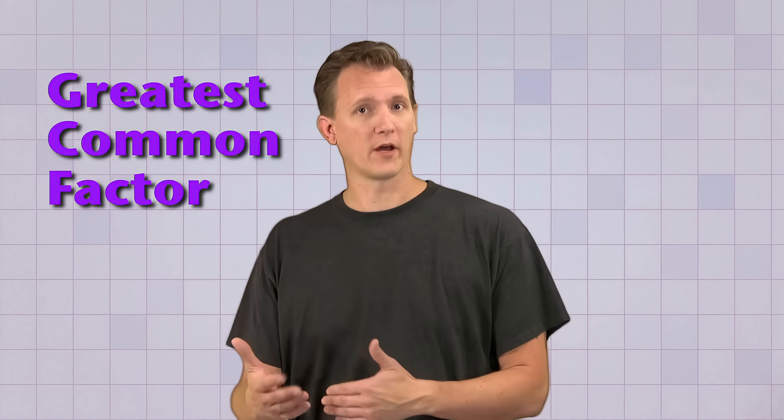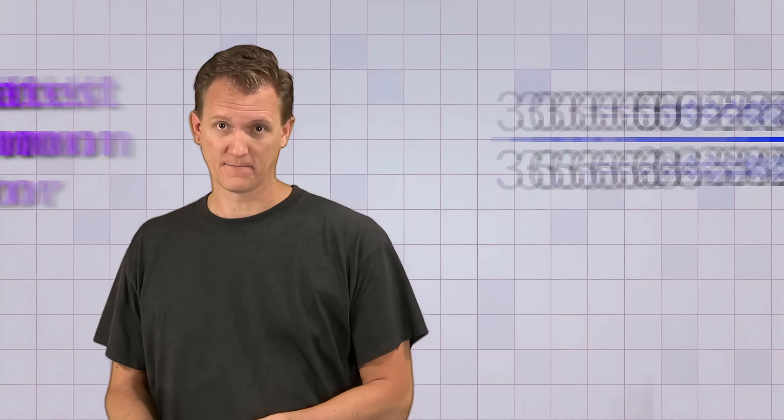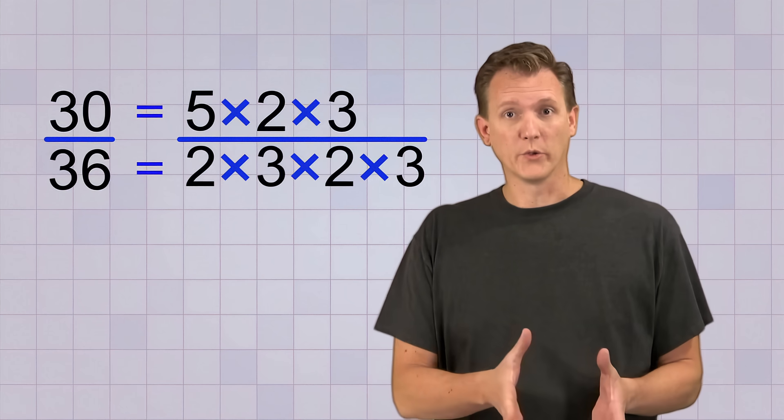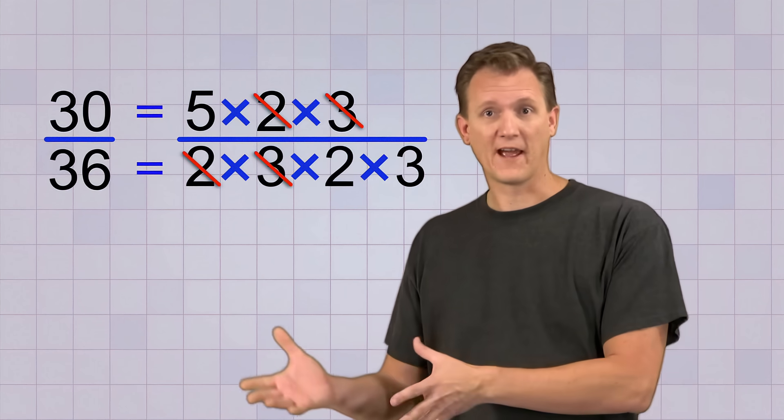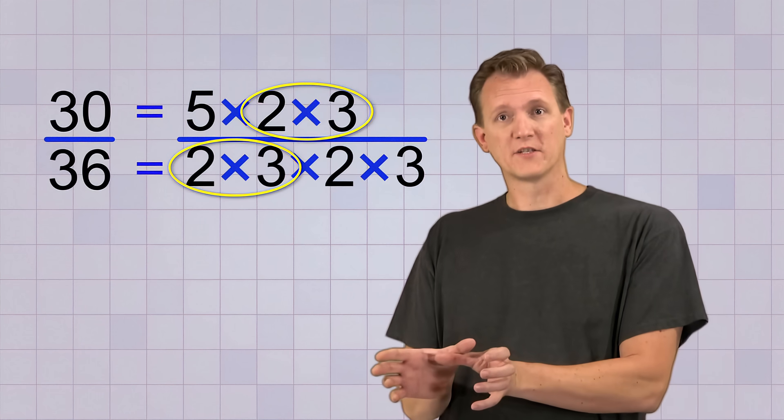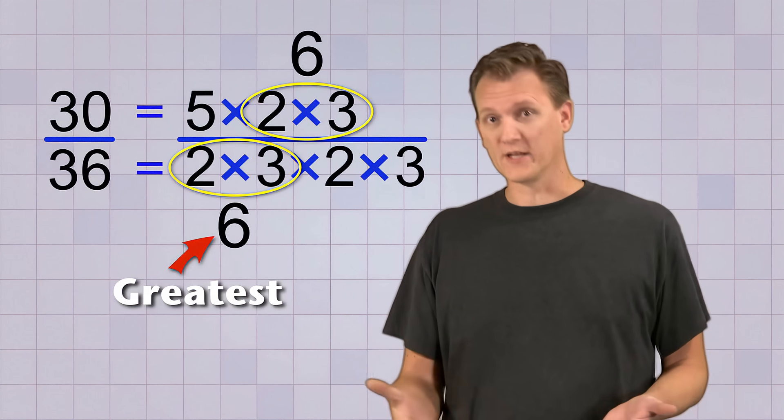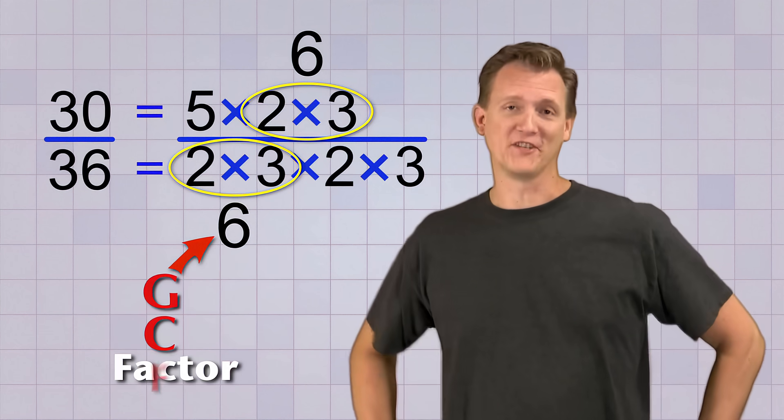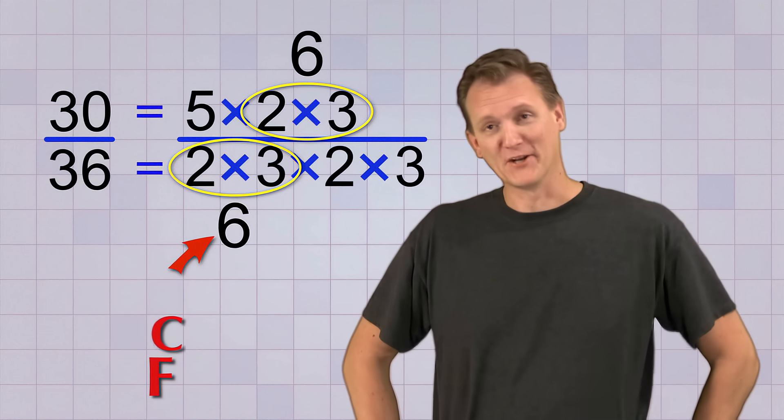Now some of you may have been taught that the way to simplify fractions is to find the greatest common factor of the top and bottom numbers and just cancel that. Basically, that's what we are doing when we cancel all of the common factors using our procedure. In fact, if you multiply all of the common factors together, you'll get the greatest common factor. Or GCF, as I like to call it. You know, to sound cool.